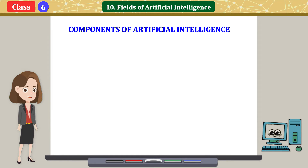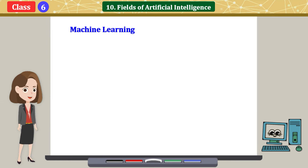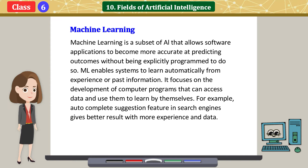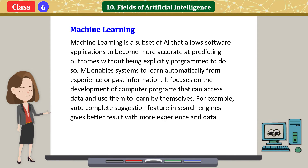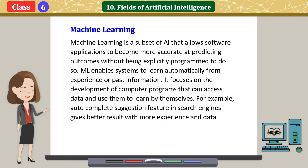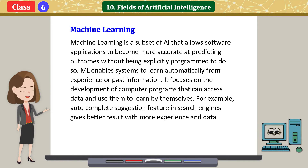Components of Artificial Intelligence. The core technologies of AI make it possible for machines to mimic the human brain and learning. Machine Learning is a subset of AI that allows software applications to become more accurate at predicting outcomes without being explicitly programmed to do so. ML enables systems to learn automatically from experience or past information. It focuses on the development of computer programs that can access data and use them to learn by themselves. For example, the autocomplete suggestion feature in search engines gives better results with more experience and data.